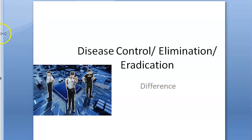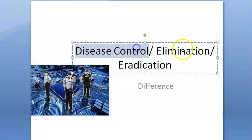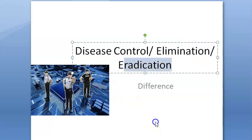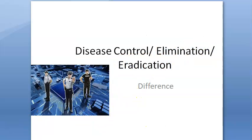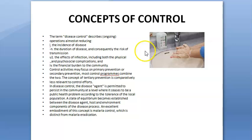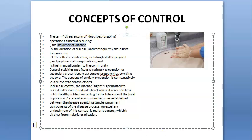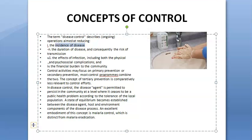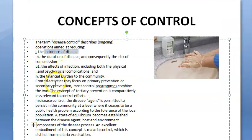In this video, let us look at three terminologies: disease control, disease elimination, and disease eradication, and what the differences are. Disease control means you want to reduce the incidence of the disease — new cases — you want to reduce the duration of the disease, and you want to reduce the risk of transmission.